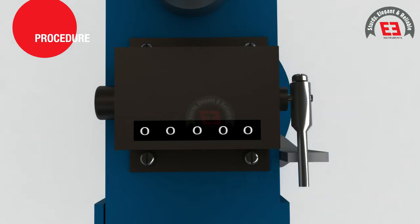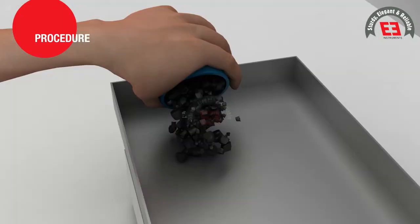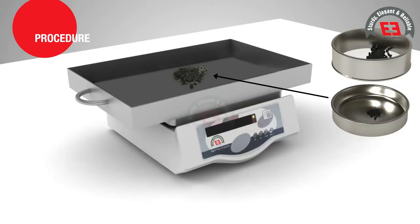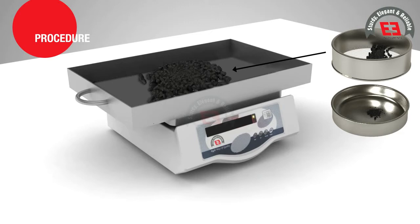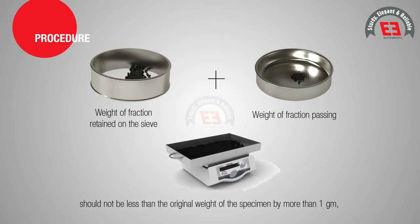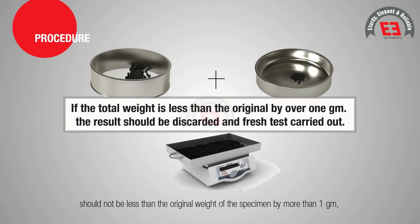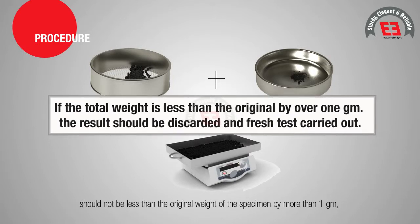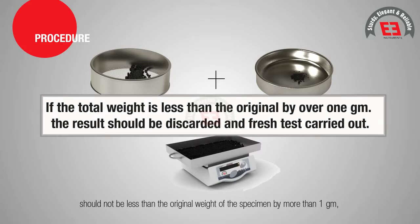The blows are recorded in the blow counter. The crushed aggregates are then removed from the cup and the whole sample is passed through a 2.36 mm sieve. The fraction passing this sieve is weighed accurate to 0.1 gram. The fraction retained on the sieve is also weighed, and the total of fractions passing and retained on the sieve should not be less than the original weight of the specimen by more than 1 gram. If the total weight is less than the original weight by over 1 gram, the result should be discarded and a fresh test carried out.